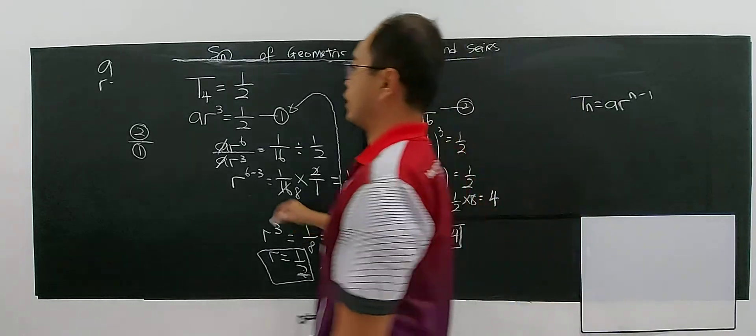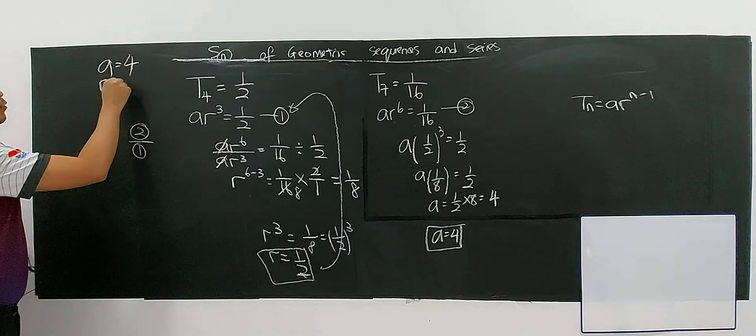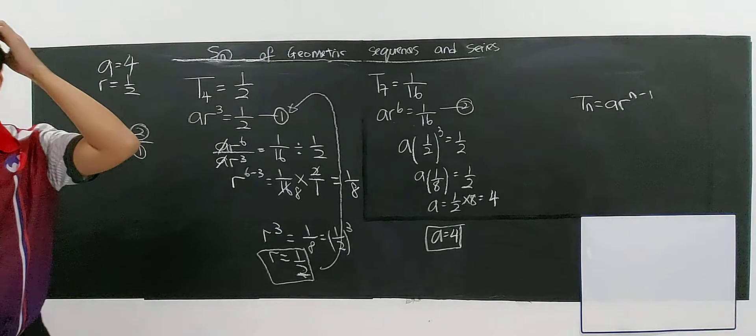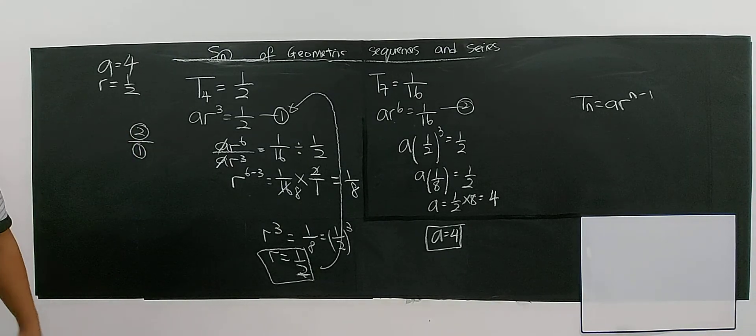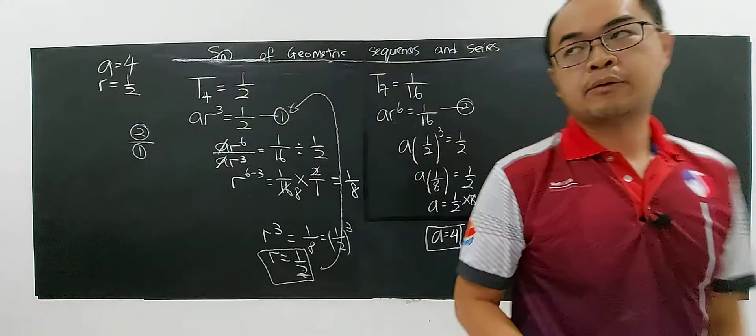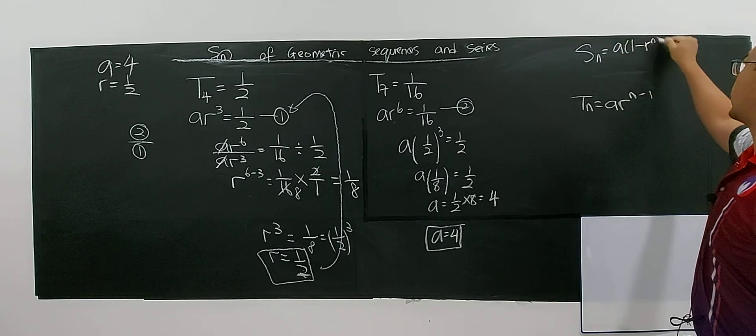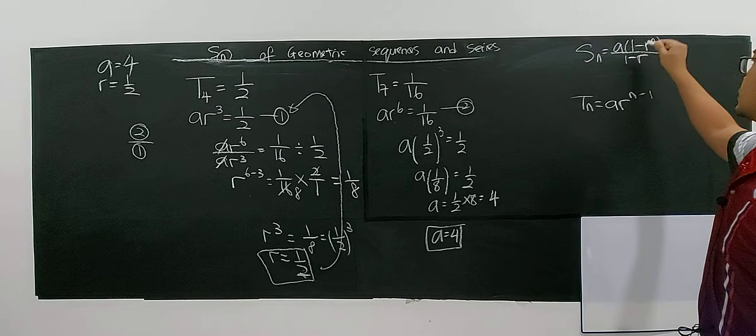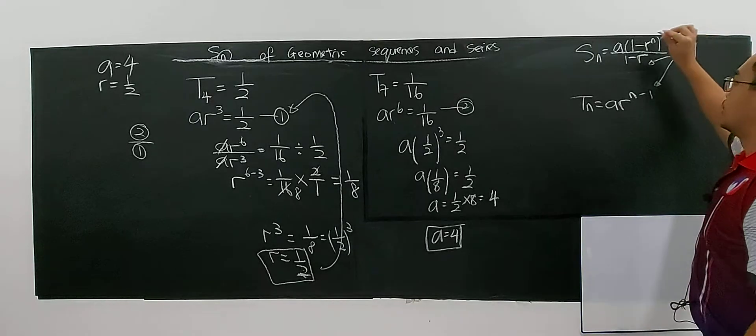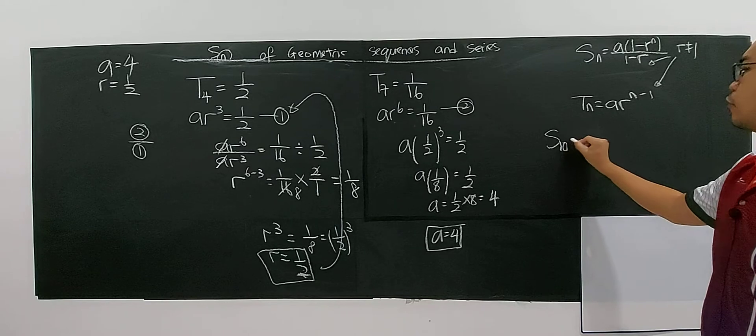Now you know the value of A already. The value of A is 4, and the value of R is 1 over 2. But this is not the end of the question yet, because this question asks you to find the sum of the first 10 terms. Okay, means they want you to apply this formula. The SN equals to A, 1 minus RN over 1 minus R, where R cannot be 1 for both formulas. So apply this one because they said find the sum of the first 10 terms.